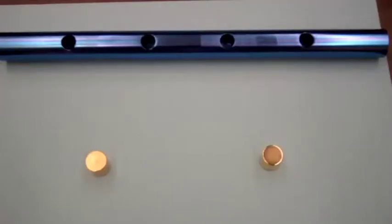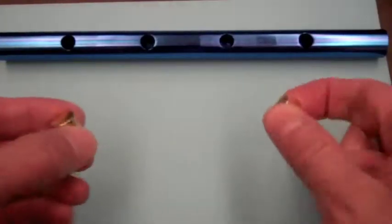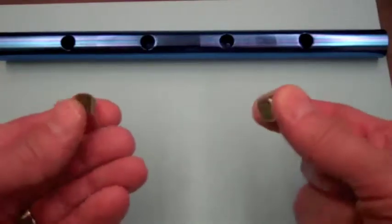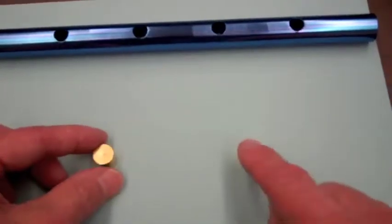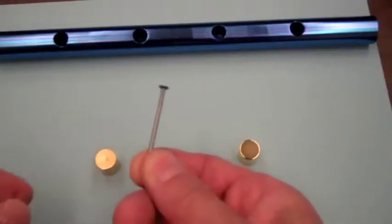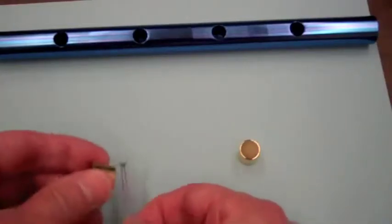Okay, we're going to demonstrate the concept of eddy currents. What I have here are two identical slugs in terms of size and weight, except one is a magnet and one is not. This iron nail will not be attracted to this non-magnetic slug.